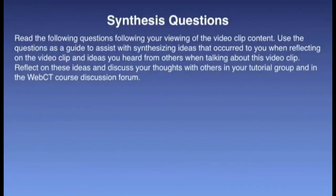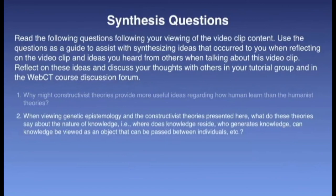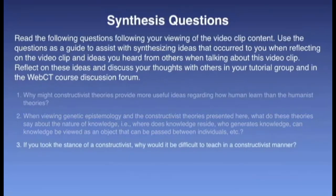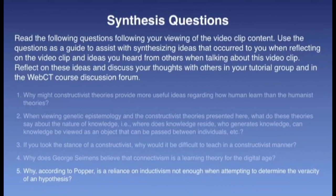Finally, the synthesis questions for this clip are as follows. 1. Why might constructivist theories provide more useful ideas regarding how humans learn than the humanist theories? 2. When viewing genetic epistemology and the constructivist theories presented here, what do these theories say about the nature of knowledge? In other words, where does knowledge reside, who generates knowledge, and can knowledge be viewed as an object that can be passed between individuals? 3. If you took the stance of a constructivist, why would it be difficult to teach in a constructivist manner? 4. Why does George Siemens believe that connectivism is a learning theory for the digital age? 5. Why, according to Popper, is a reliance on inductivism not enough when attempting to determine the veracity of a hypothesis?